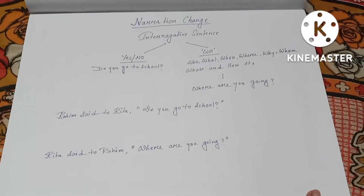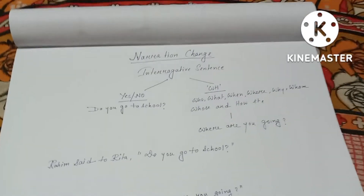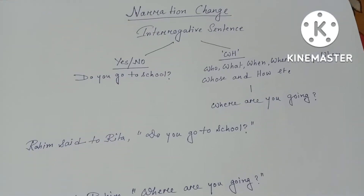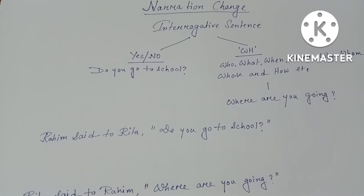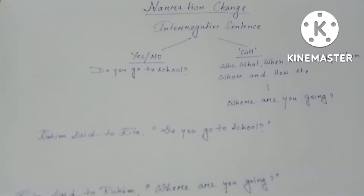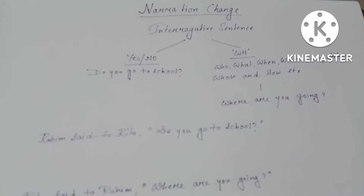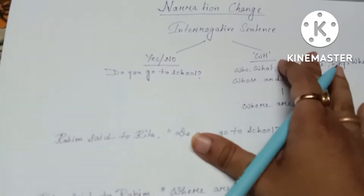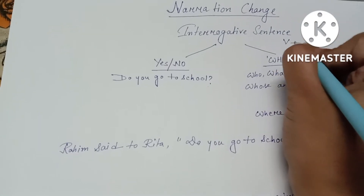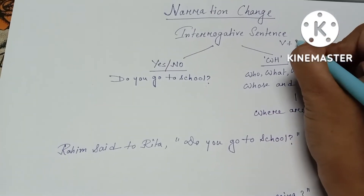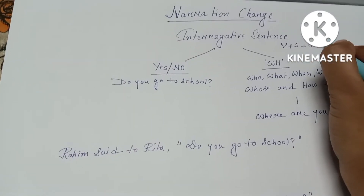First let's see what is called an interrogative sentence. We all know that an interrogative sentence means to ask something — with which sentence we can ask something. The sentence structure is: verb plus subject plus object, and obviously a question mark. This is the sentence structure.